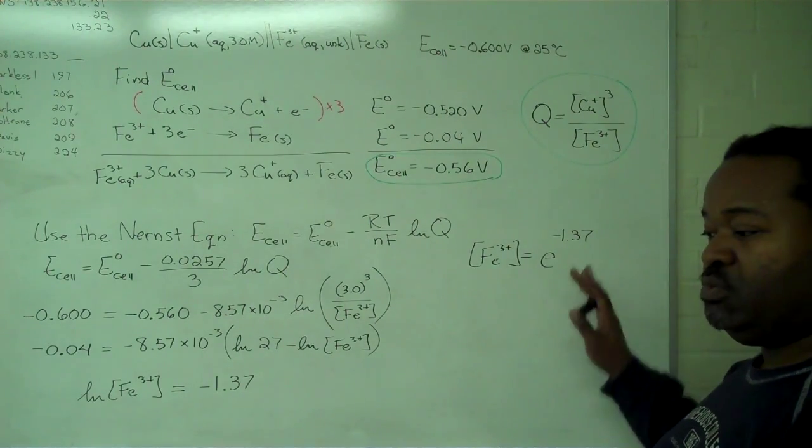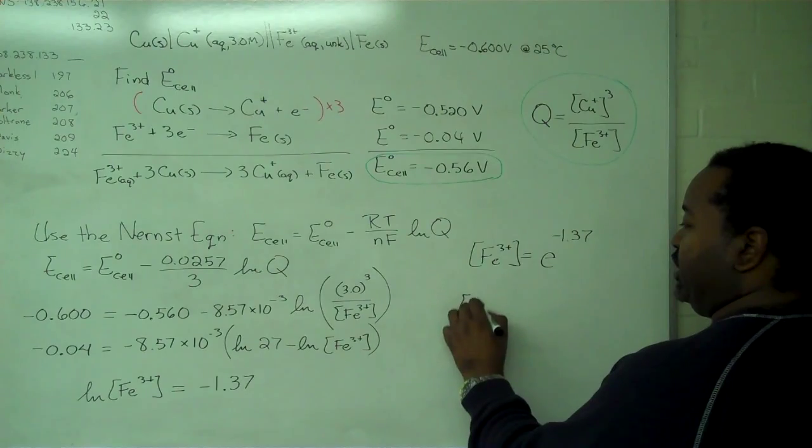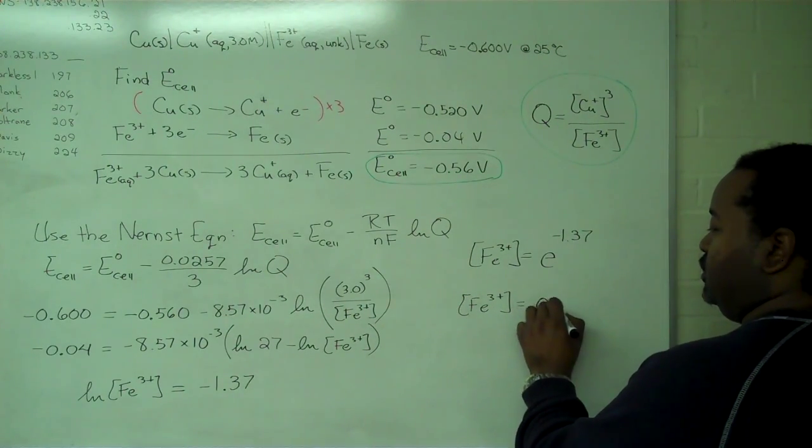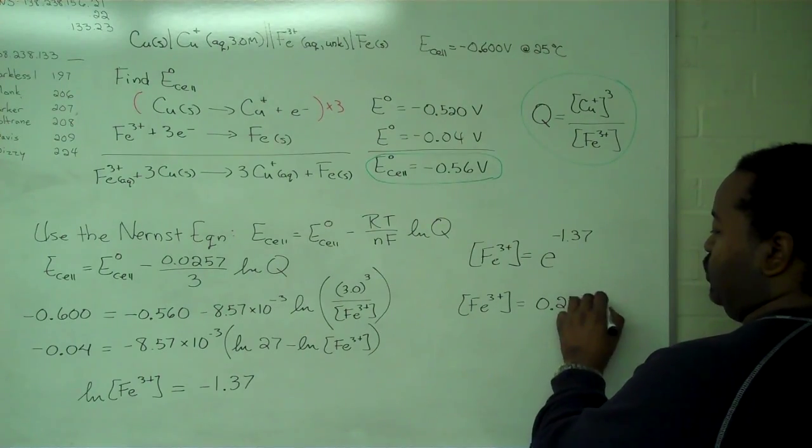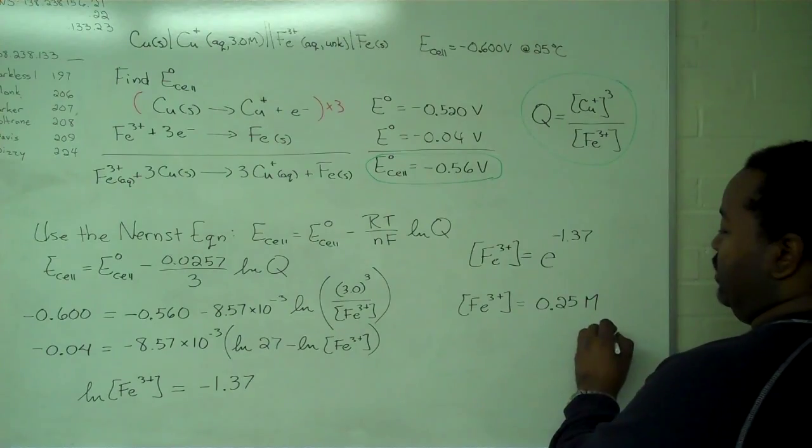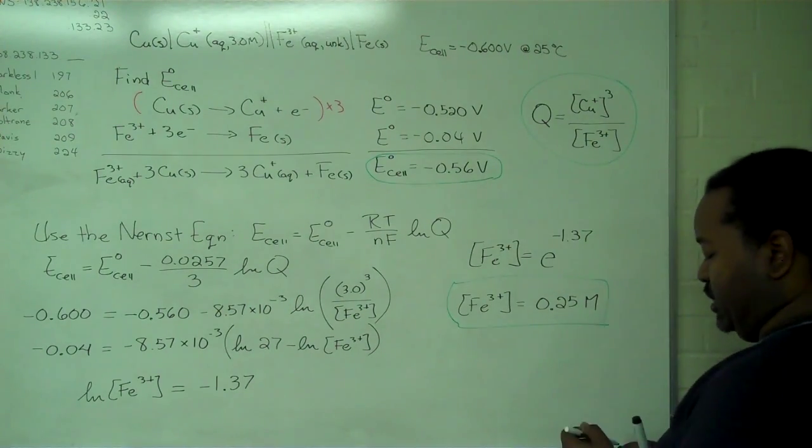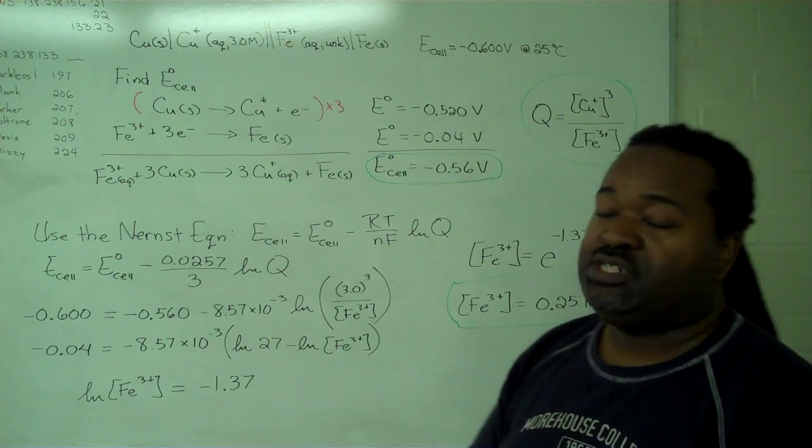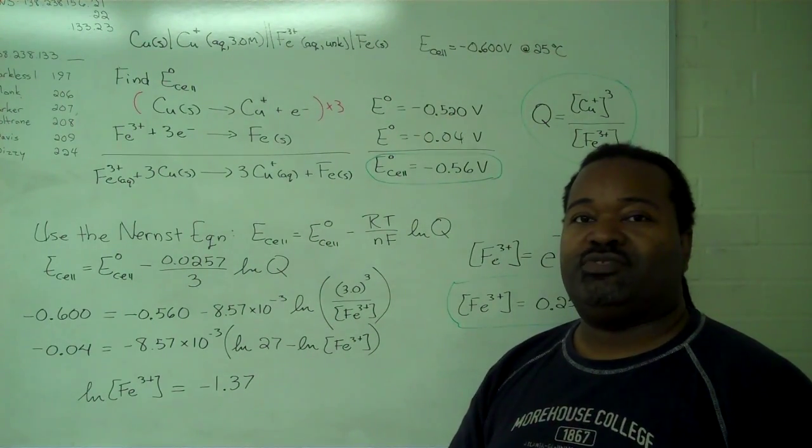So once we plug that in, what we find is the value of our concentration is 0.25 molar. So this is the value of the unknown concentration that gives us this reaction with the cell potential of negative 0.6 volts.